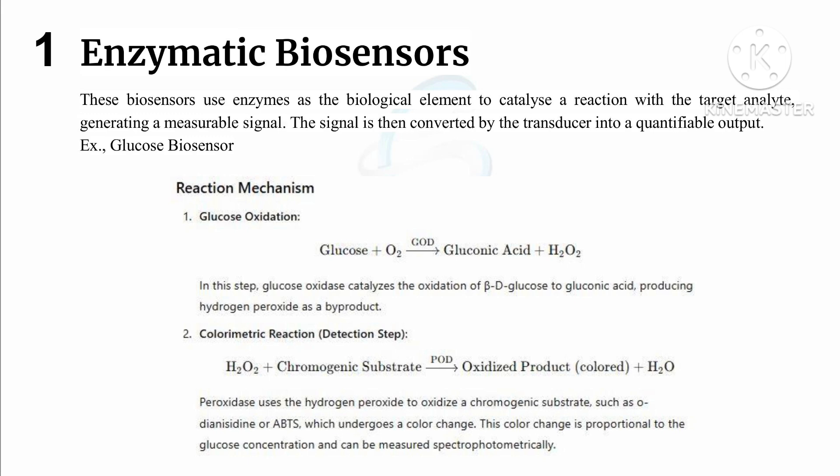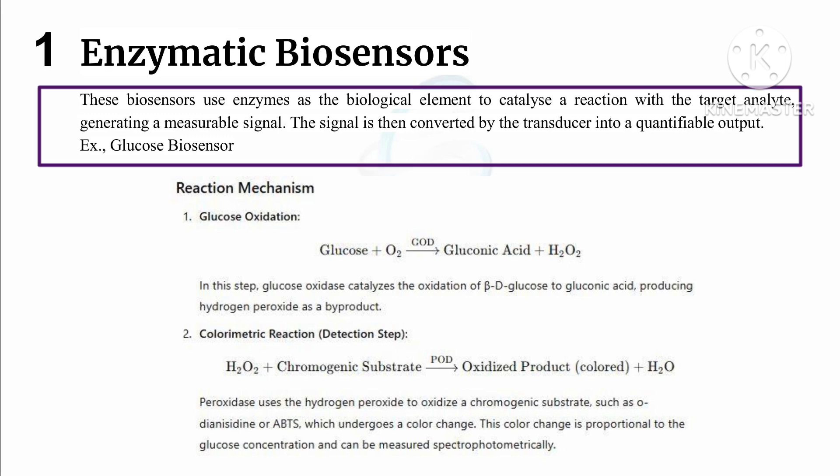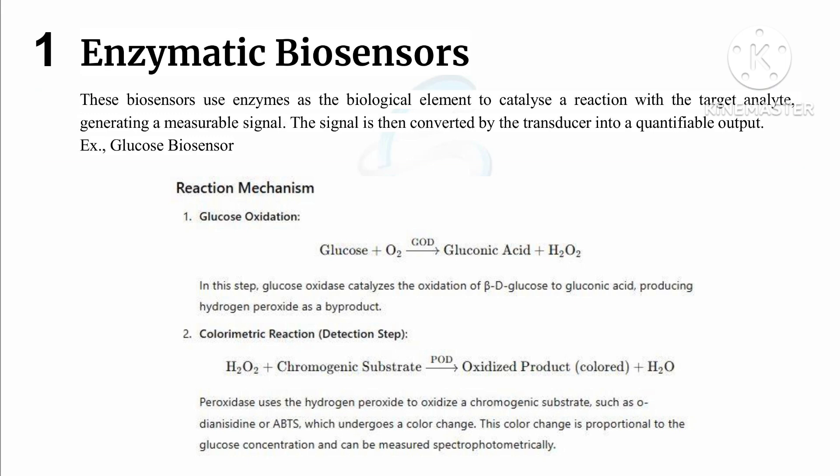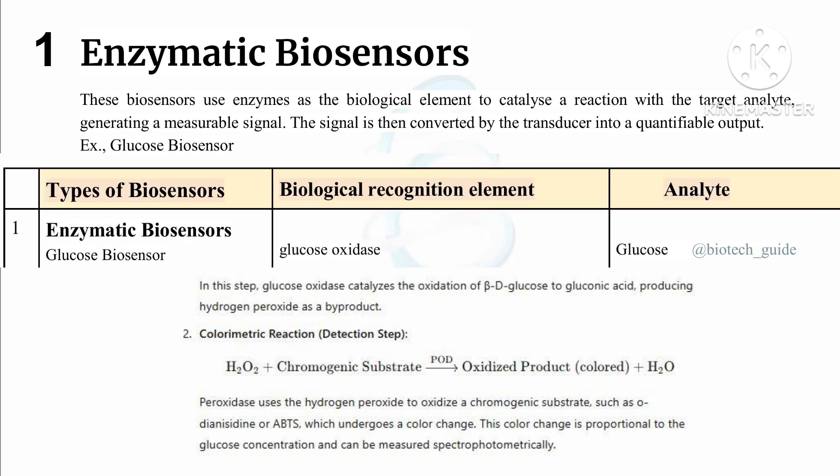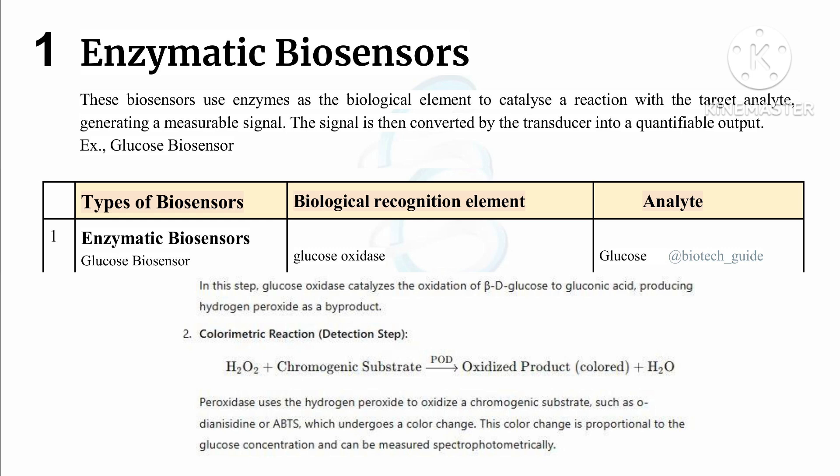First, enzymatic biosensor. This biosensor uses an enzyme as a biological element to catalyze a reaction with the target analyte, generating a measurable signal, and the signal is then converted by the transducer into a quantifiable output. An example is the glucose biosensor, where glucose oxidase is the biological recognition element and glucose is the analyte.